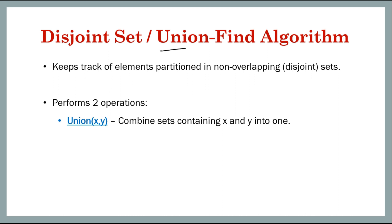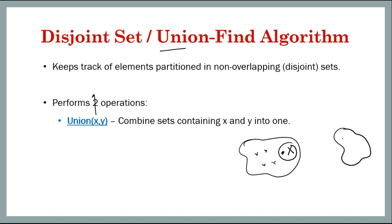The first operation is union. In union of two elements x and y, we don't simply combine the elements — we find which set they belong to. There may be a set containing x and another disjoint set containing y. For each set we have one representative or leader, which is the parent node if represented as a tree.